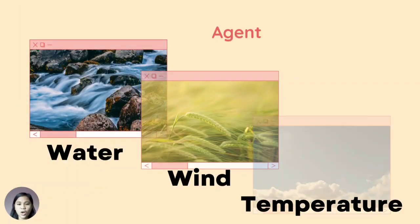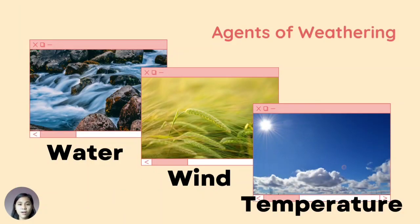There are agents of weathering and these are some. We have first, water. Water can break rocks in different ways. The strong waves that seep into the cracks of rocks can make them break. When it gets colder, this water can expand and turn into ice, which can trigger rocks to break as well.